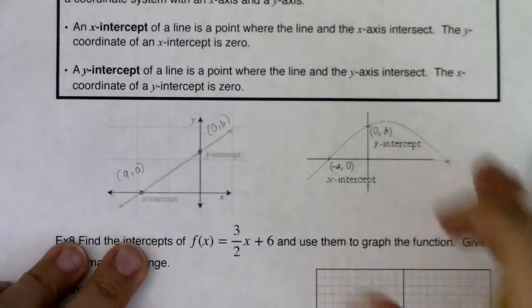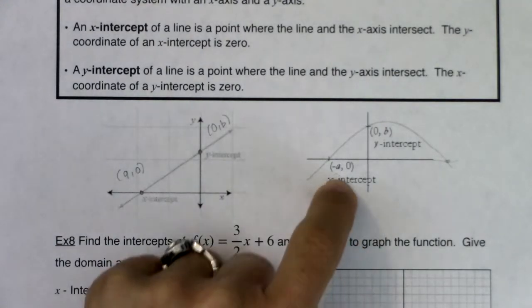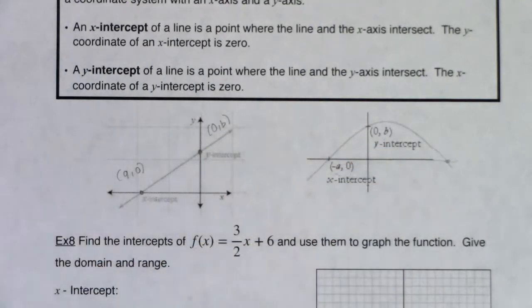And once we move beyond lines, when we move into quadratics and even higher-degree polynomials like cubics and quartics, we will start to have multiple x-intercepts. But you will only ever have one y-intercept. If you had more than one y-intercept, your relation would fail to be a function.